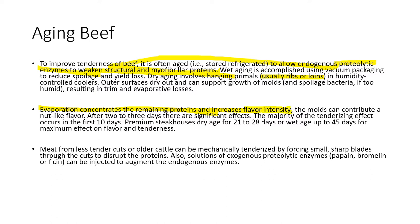During dry aging, evaporation concentrates the remaining protein and increases flavor intensity. Molds — an edible kind of fungus — can also form on the top layer and contribute to flavor, resulting in a nutty flavor. Signs start showing within about 2 to 3 days. Meat from less tender cuts or older cattle can also be mechanically tenderized using small sharp blades through the cuts to disrupt the protein fibers.